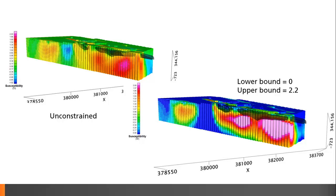By placing a lower bound of zero, which enforces positivity, and an upper bound of 2.2, which is what I expect as the maximum susceptibility for this region, I get a more well-defined result.